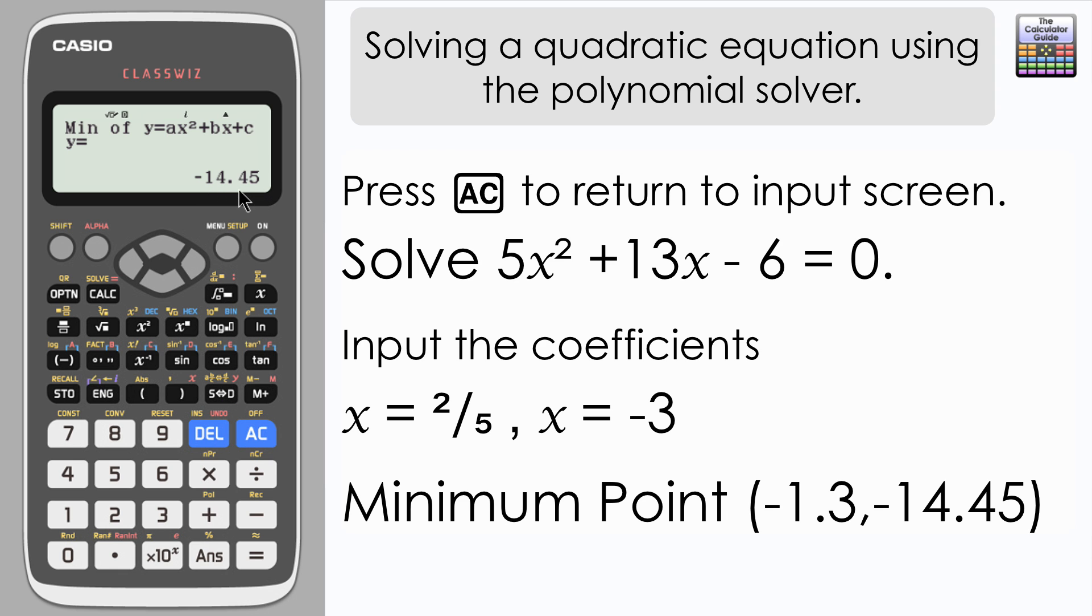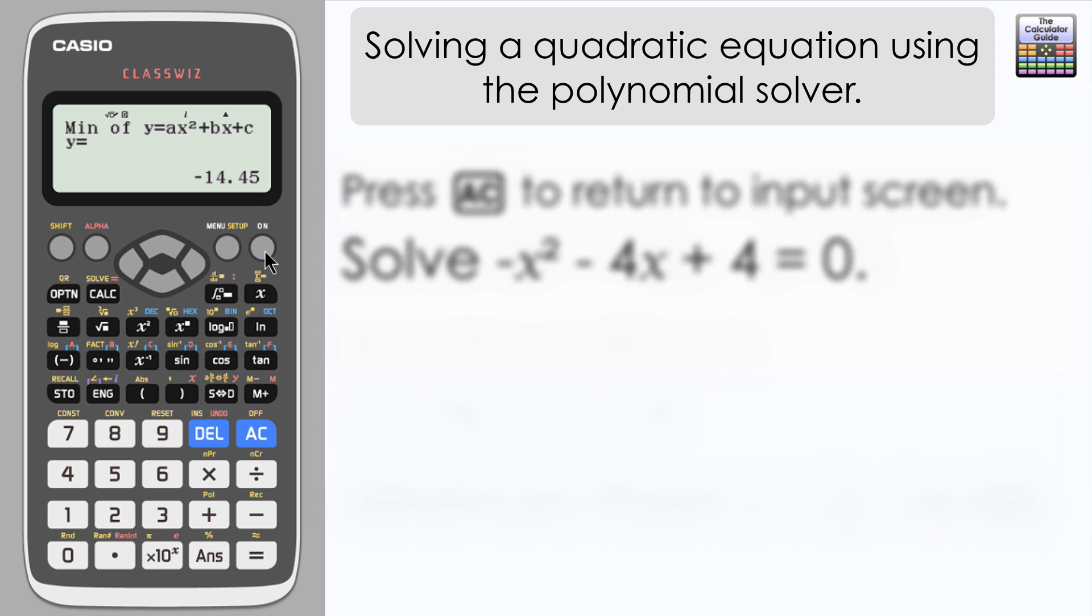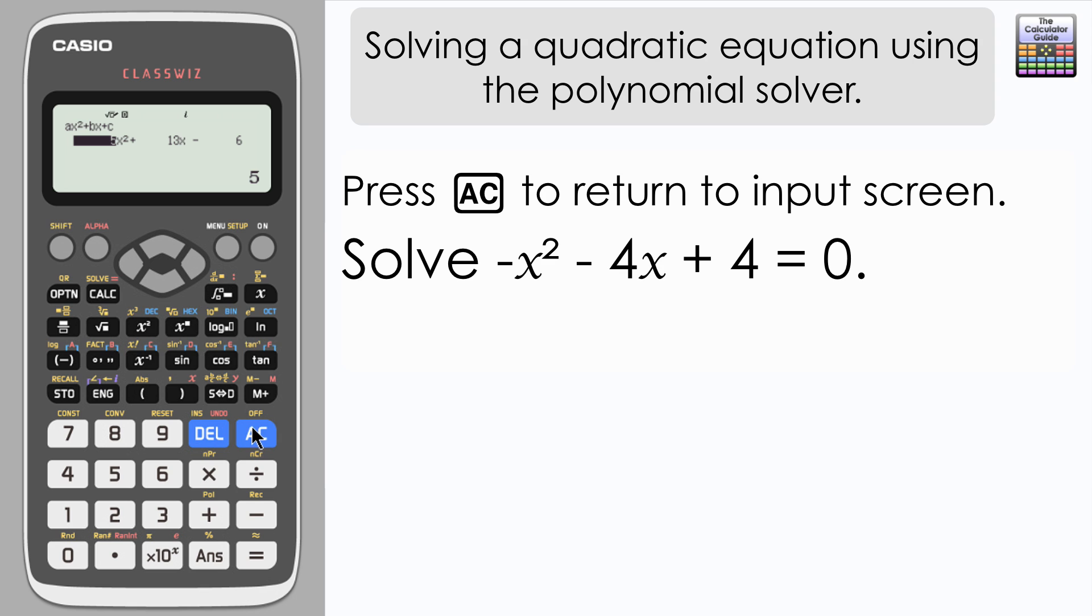Let's try one more quadratic equation, this time with a negative x squared coefficient. Press AC to go back to the input screen. And this time we're going to solve minus x squared minus 4x plus 4.